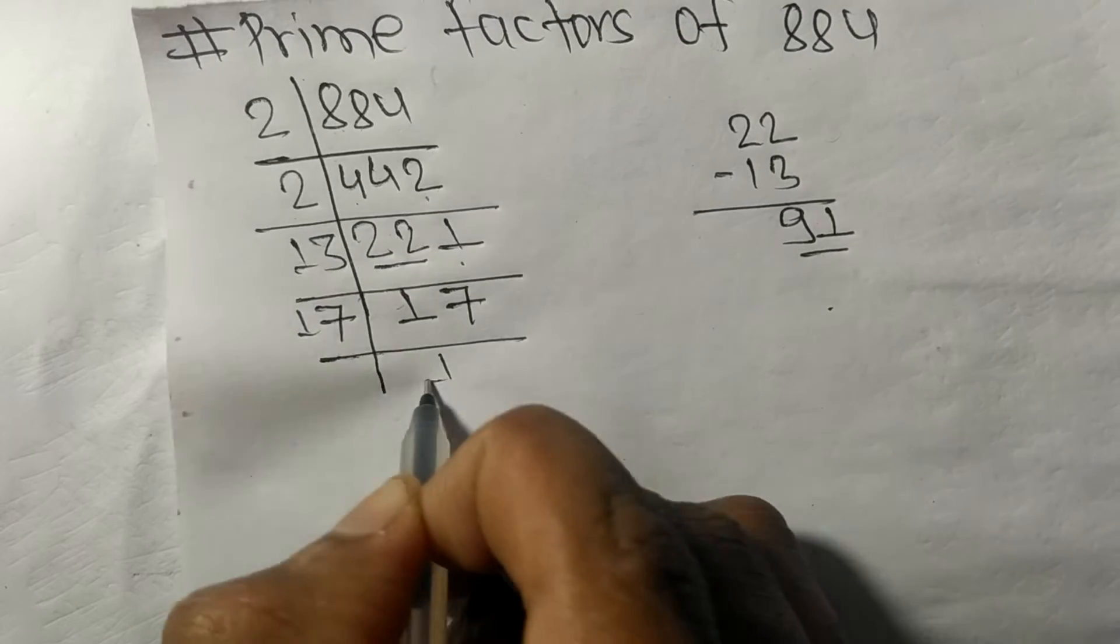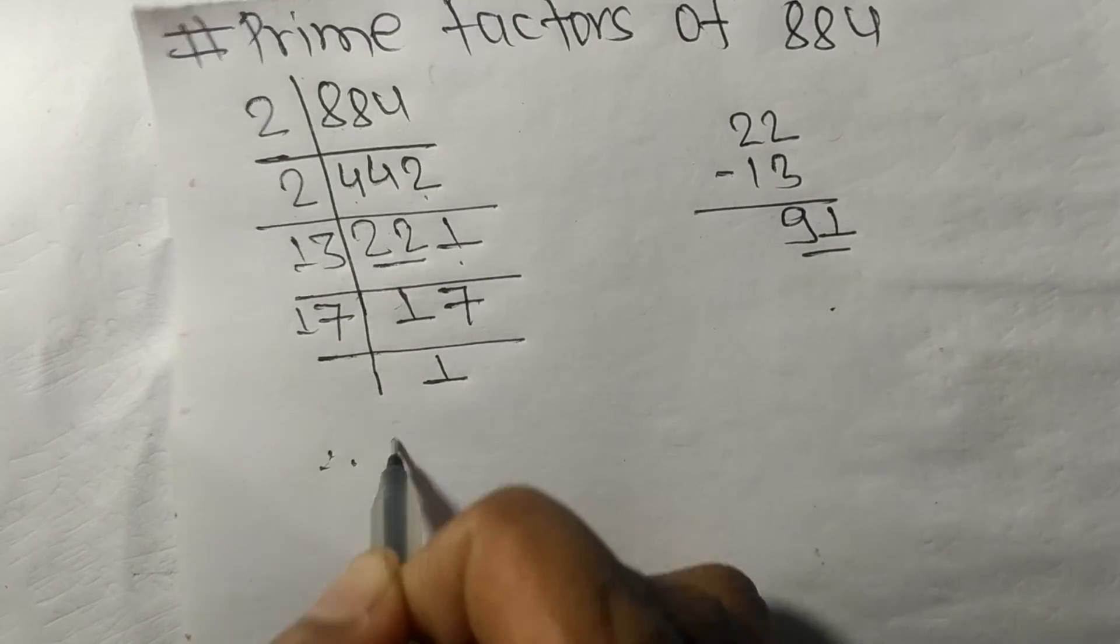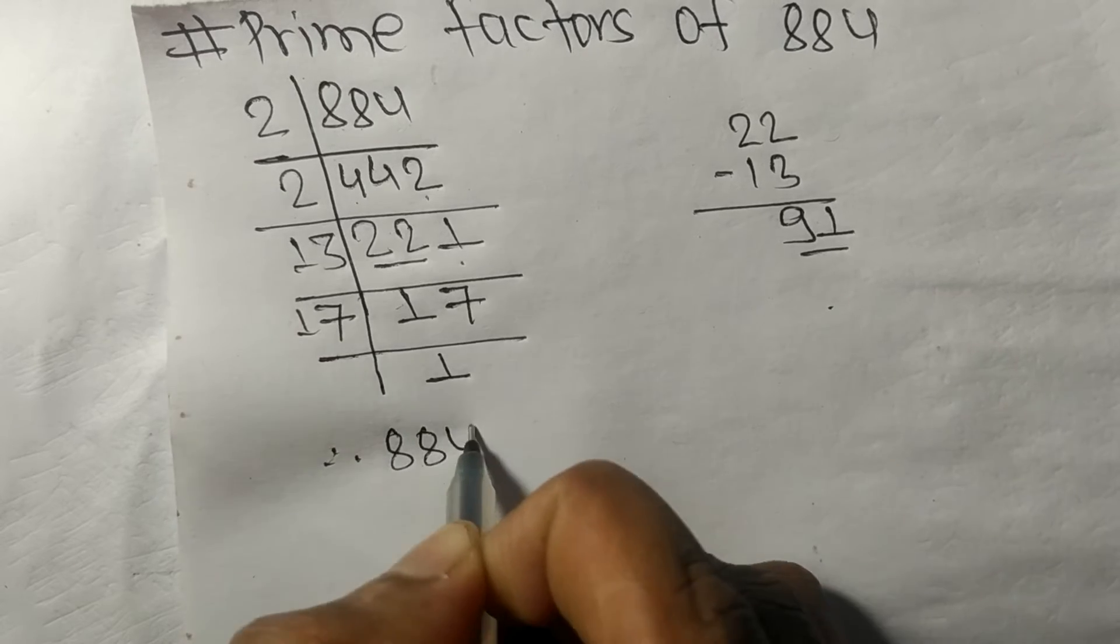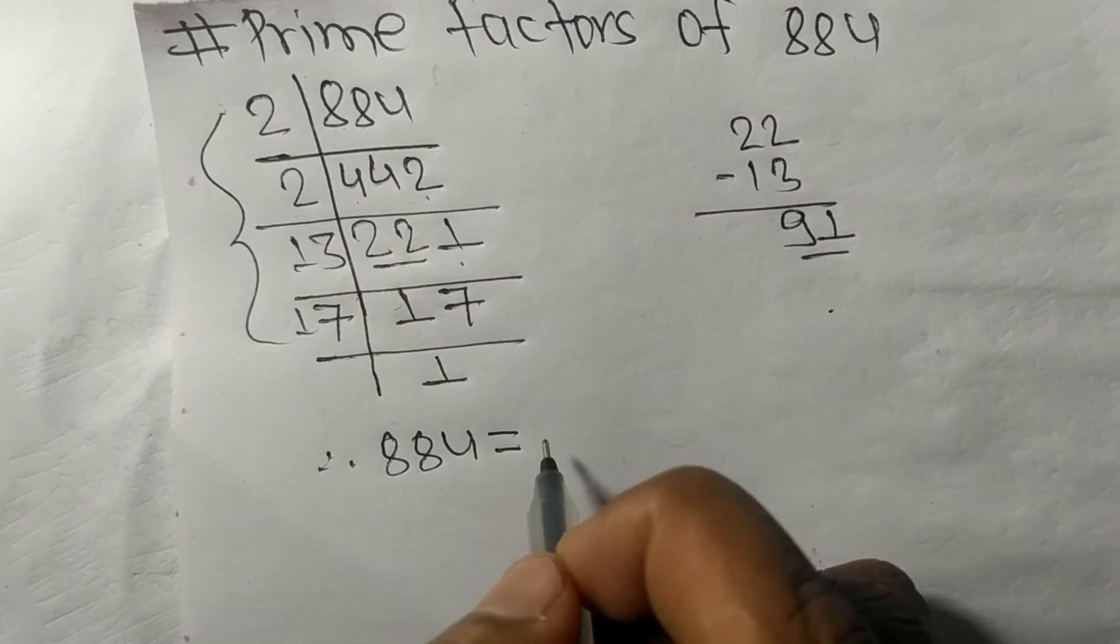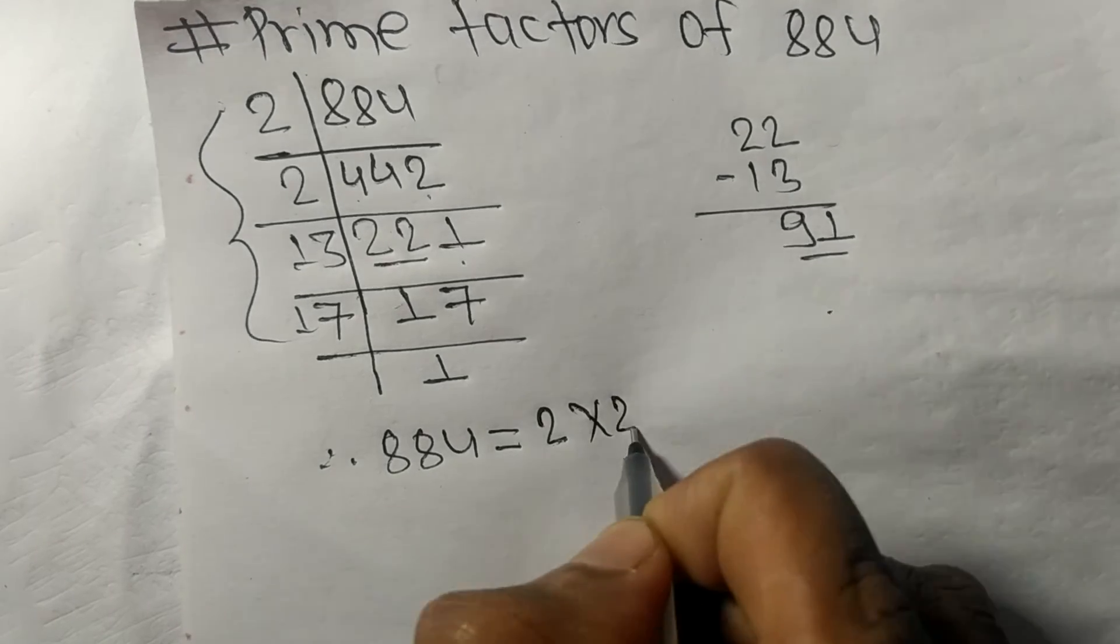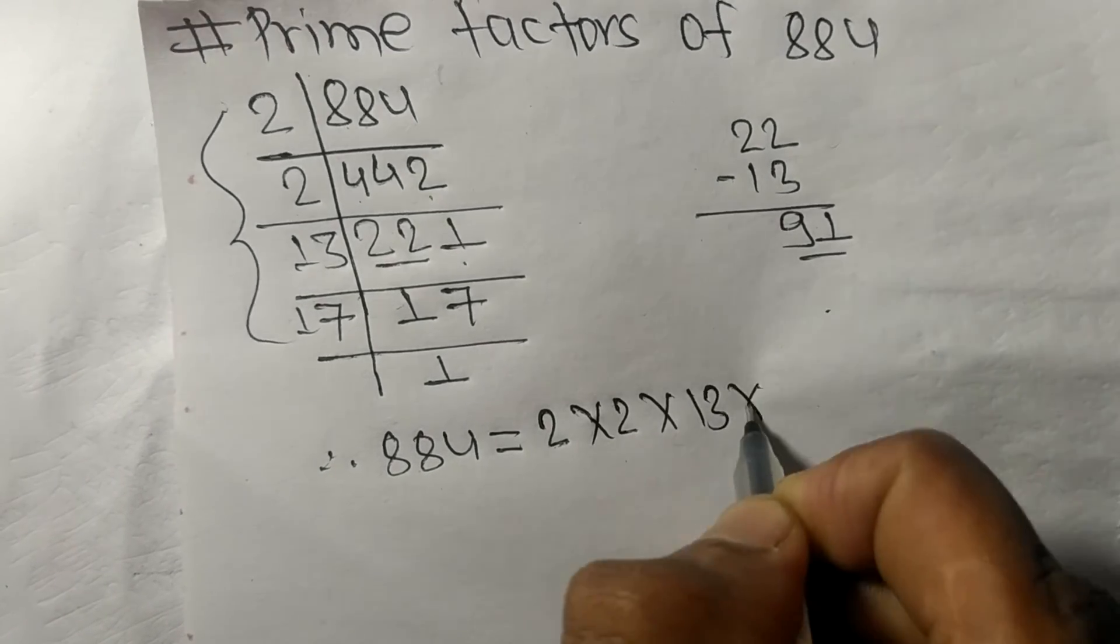Therefore, 884 equals 2 times 2 times 2 times 13 times 17.